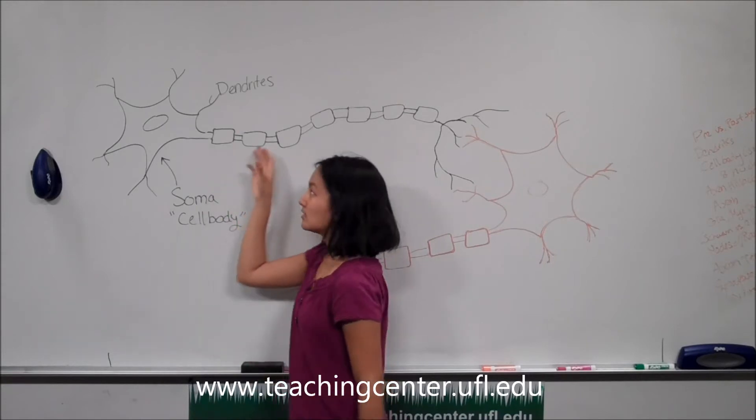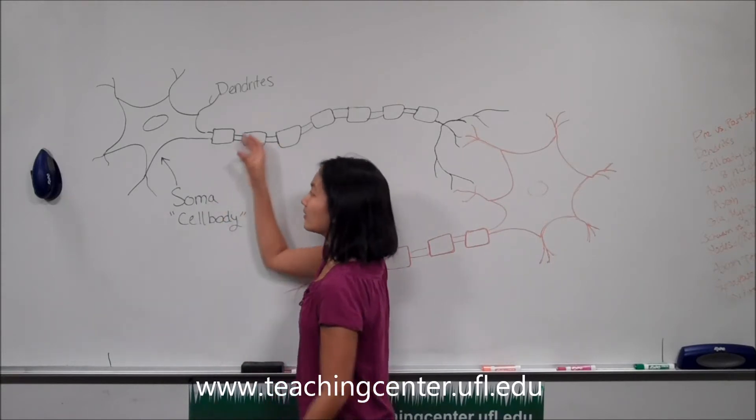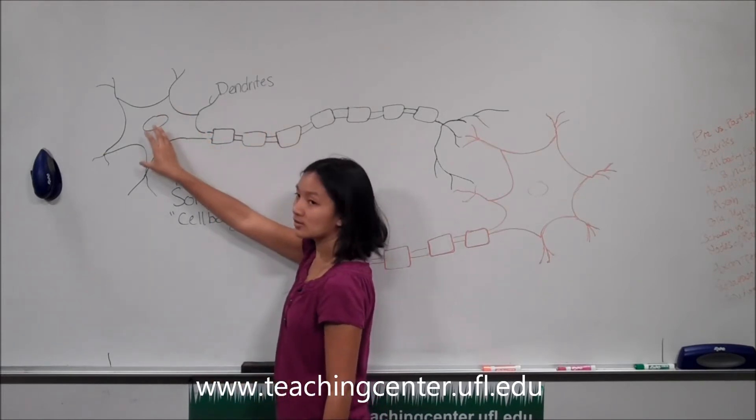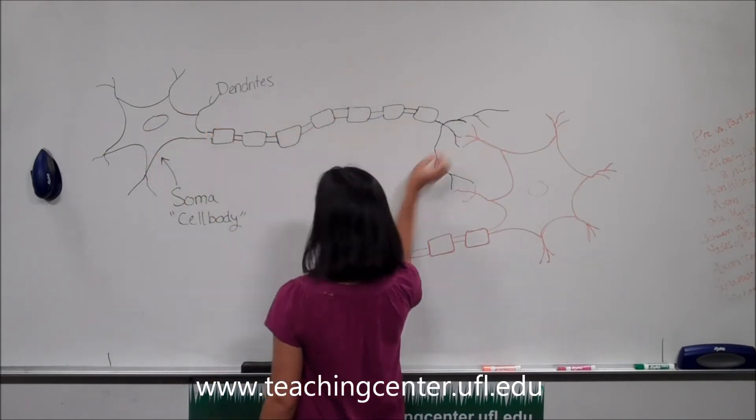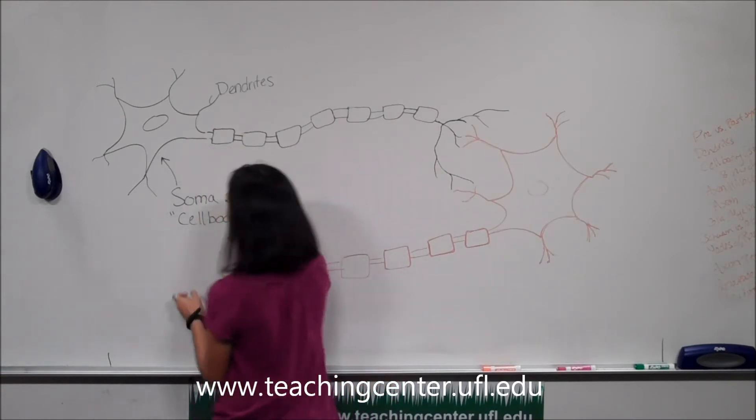Okay, so these dendrites collect all the signals from the external environment and collect them here at this junction between the soma and the axon. So this small junction right here is known as the axon hillock.